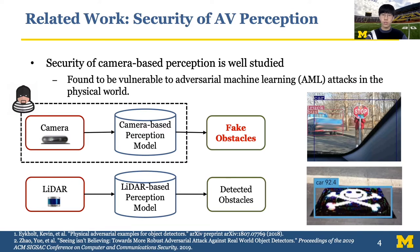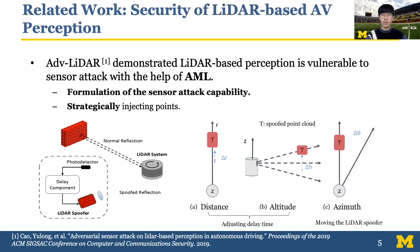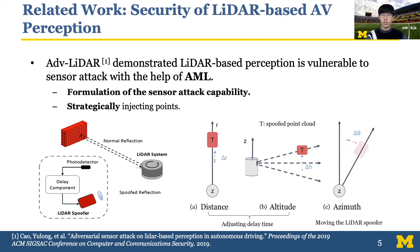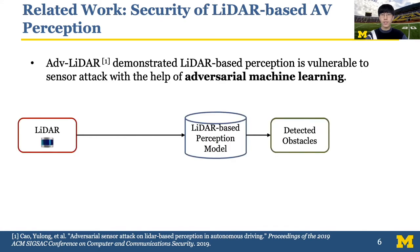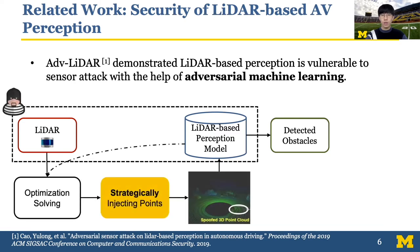Extensive research has been made to study the security of camera-based perception in AVs. Attackers can utilize stickers to fool camera-based perception models to introduce fake vehicles. Recently, a pioneering work called ADV-LiDAR first demonstrated that LiDAR-based perception is also vulnerable to sensor attacks using adversarial machine learning. The authors showed it is feasible to inject a small number of points by shooting malicious lasers at the victim LiDAR, formulating the sensor attack capability as controlling the distance, altitude, and azimuth of spoofed points. By modeling this capability as an optimization problem, attackers learn how to strategically shoot lasers to fool LiDAR-based perception models.